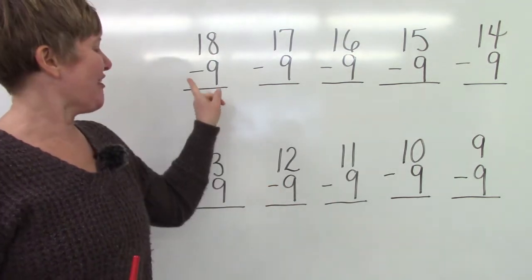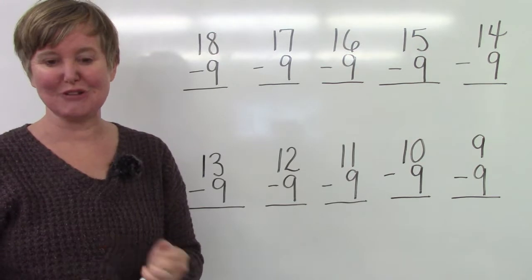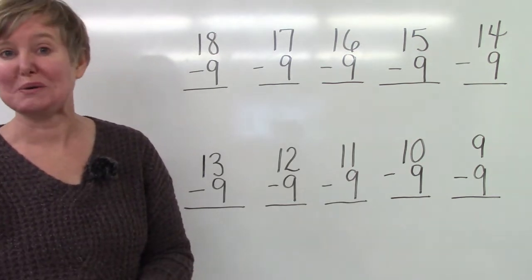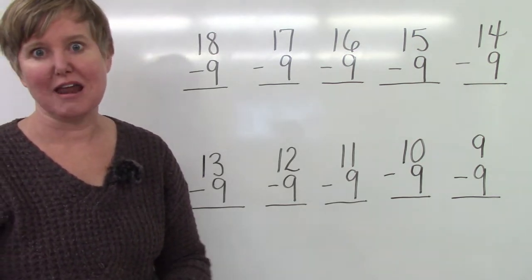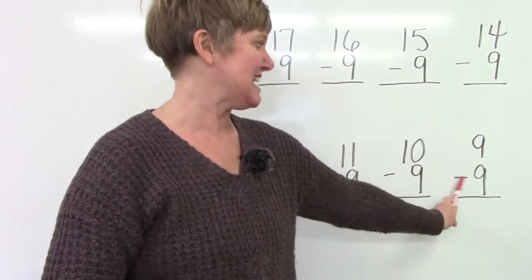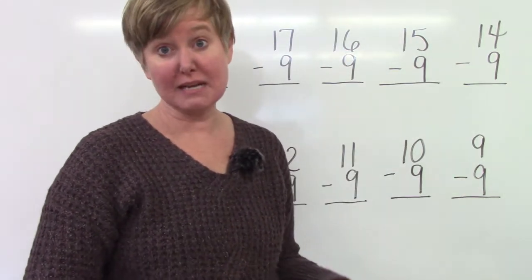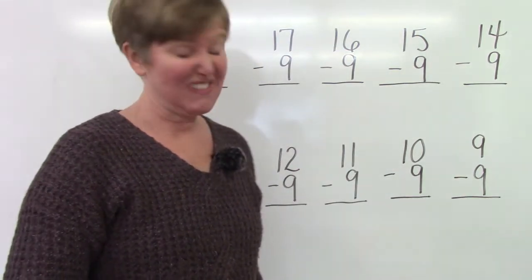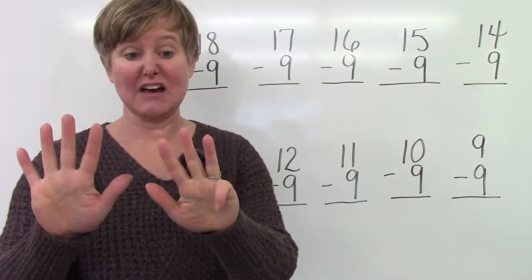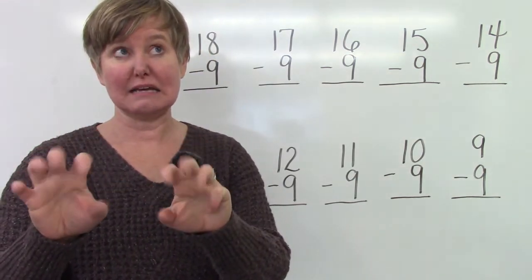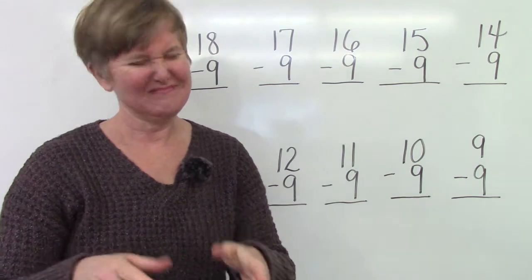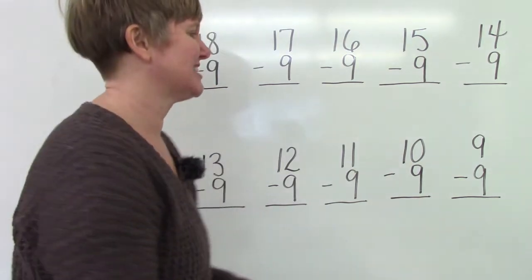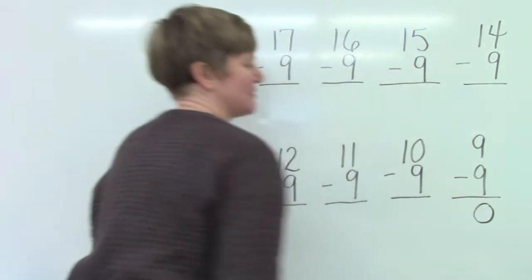Now there are already two questions up here that I think that you will know right away. The first one is nine take away nine or nine minus nine. So that one's pretty easy. If you have nine and you take nine away you don't have anything left. So the answer is zero.